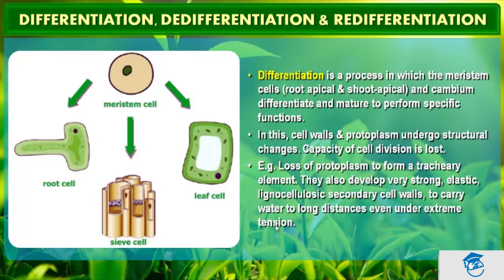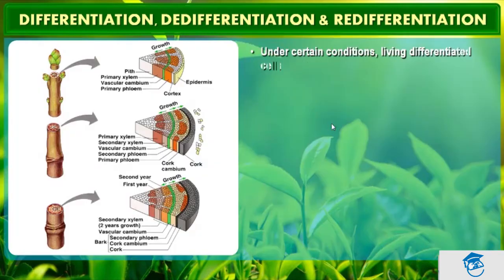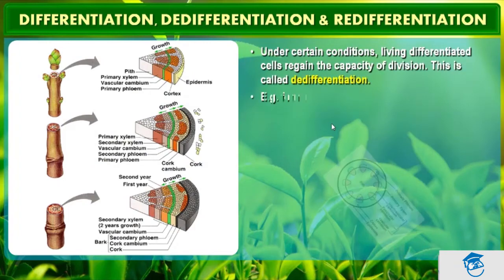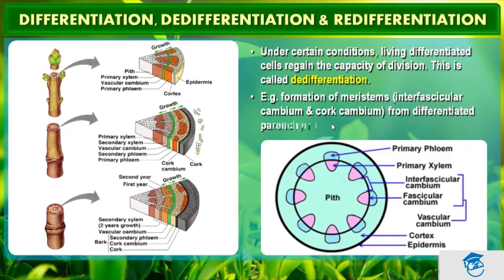You can correlate various anatomical features in plants to the functions they perform. Plants show another interesting phenomenon called de-differentiation. Living differentiated cells that have lost the capacity to divide can regain the capacity for division under certain conditions — this phenomenon is termed de-differentiation.